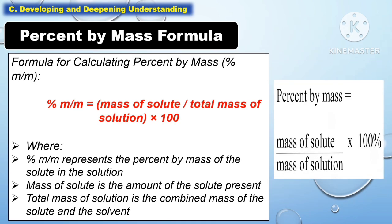The following are the percent by mass formula. The formula for calculating percent by mass is equal to the mass of solute divided by the total mass of the solution, multiplied by 100, where percent represents the percent by mass of the solute in the solution, mass of solute is the amount of solute present, and total mass of solution is the combined mass of the solute and the solvent.